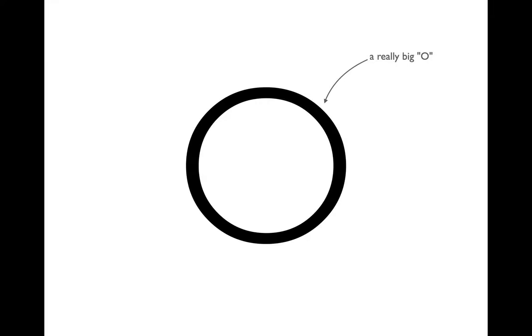In the last video we talked about two things: input size, which we usually capture with the variable n — that might be the size of a list, the length of a string, or the size of a file — and then how many steps we have to do. We thought carefully about how to define steps, and once we define them it's easier to count how many will get executed. Now we want to connect these things more formally: the number of steps is a function of the input size.